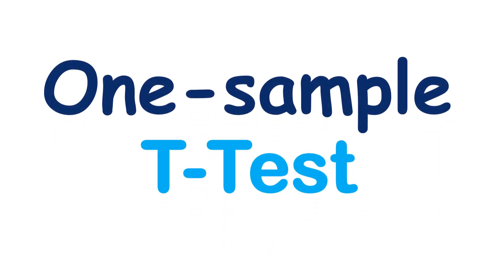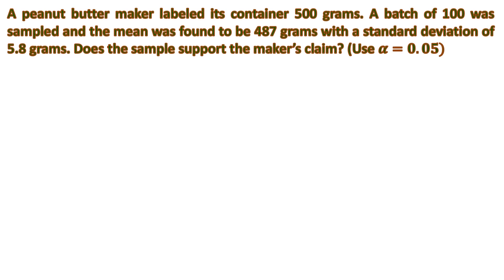In this video, I will be teaching you how to solve a statistics problem using one sample t-test. Let us analyze this problem. A peanut butter maker labeled its container 500 grams. A batch of 100 was sampled, and the mean was found to be 487 grams with a standard deviation of 5.8 grams. Does the sample support the maker's claim? Use alpha equals 0.05.